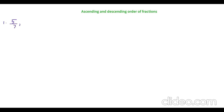The first example is 5 by 7, 2 by 7, 6 by 7, 4 by 7. As you can see, the denominators are all the same — they are all 7. So since the denominators are same, they are like fractions. I have already explained what are like fractions and unlike fractions in my previous video — the link is given below in the description. Since this is given, it's easy for us to write the ascending or descending order of like fractions.